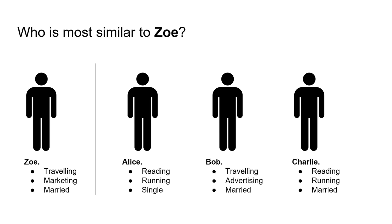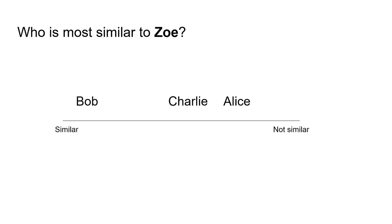Why is it in that order? Bob likes advertising, which is vaguely related to marketing — probably quite related. Alice has no overlaps with Zoe. And Charlie is married, which is a commonality that Zoe and Charlie share. So this is how I would rank their similarity if we ignore gender.